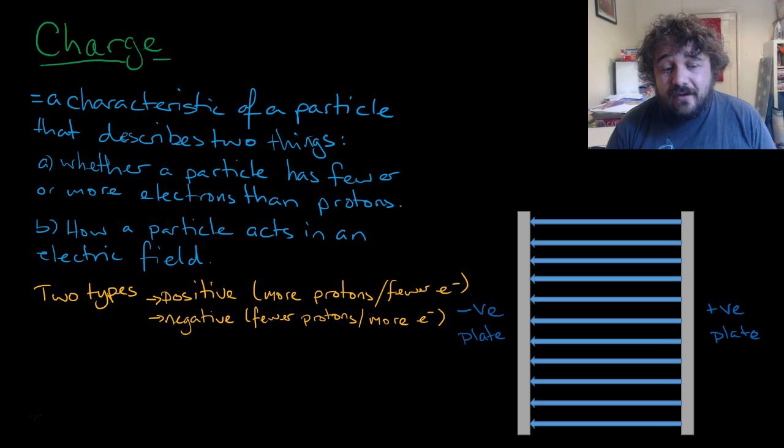So there are two types. As we know, we have positive, which has more protons than electrons. We have negative, which has more electrons than protons.